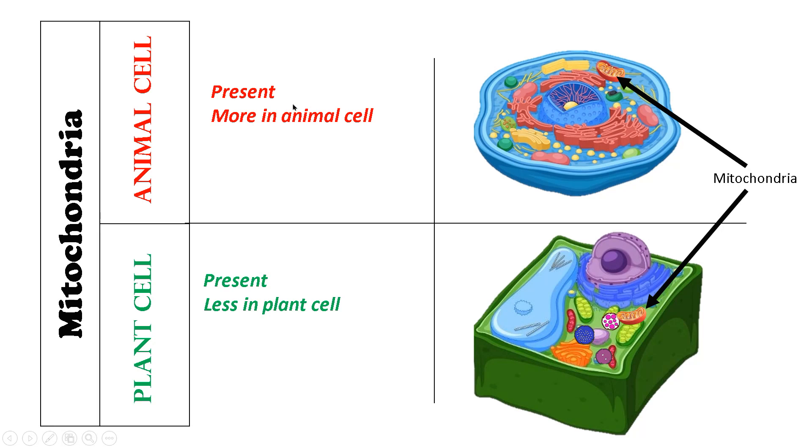The next point of difference is about mitochondria. Though mitochondria are present both in animal cells as well as plant cells, the number of mitochondria is more in animal cells and much less in plant cells. The reason is that animal cells are metabolically very active.